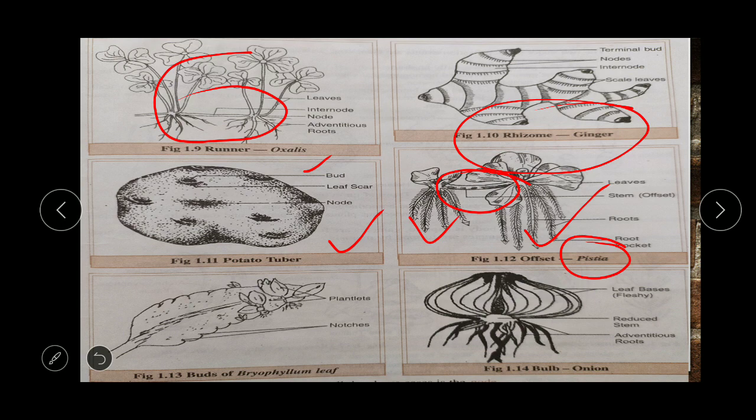When the parent plants like Oxalis or Pistia die, the runner and the offset persist — that is why they are also called organs of perennation. Now, leaf buds of Bryophyllum: small leaves arise from the Bryophyllum leaf, and when these leaf buds fall on the ground they form a new plant. The bulb of onion has a leaf base, reduced stem, and adventitious roots — this bulb has the ability to form a new organism. So all of these — runner, tuber, buds, rhizome, offset, and bulb — are vegetative propagules.